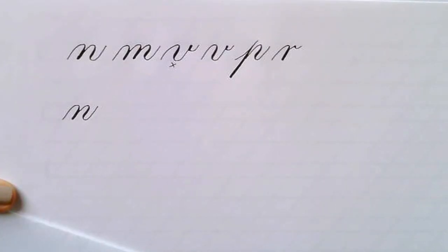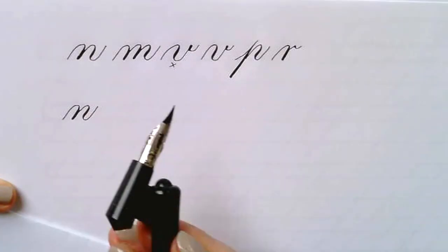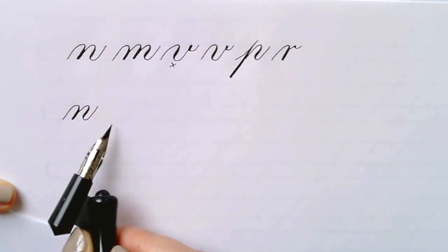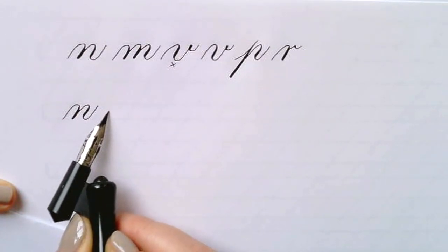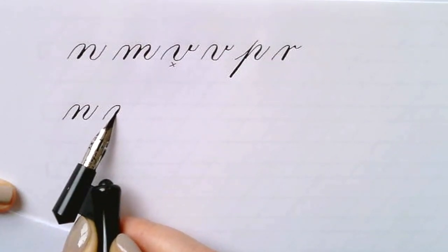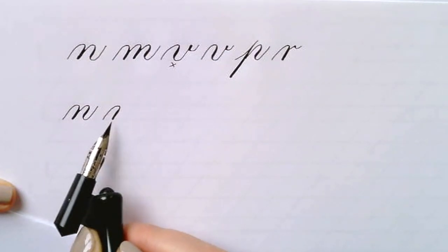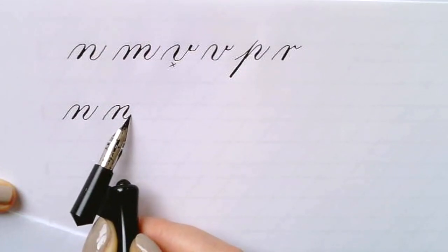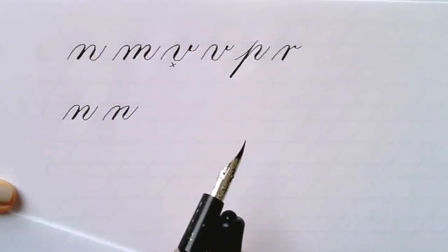Start with a light up stroke at the baseline. Come up to the waistline curve, then come heavier down, square off that down stroke of the first leg, and then the compound curve, and remember to curve all the way up to the waistline.